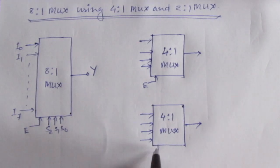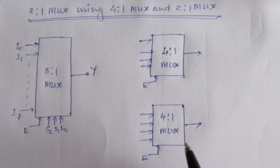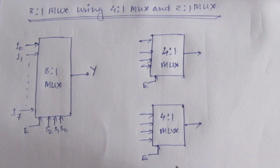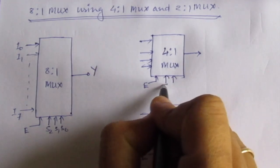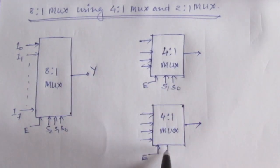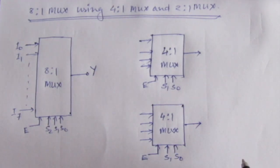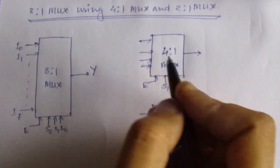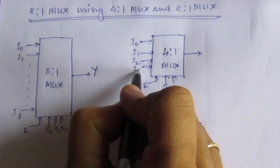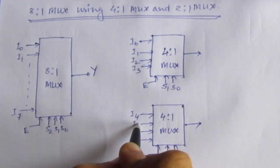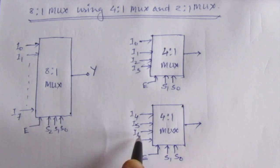Whenever the enable is high, each circuit will operate. In our design, both enable lines E will be 1 at the same time. We will have 2 input select lines, S1 and S0, shared by both multiplexers. The input lines for the first multiplexer are I0, I1, I2, I3, and for the second multiplexer I4, I5, I6, I7.